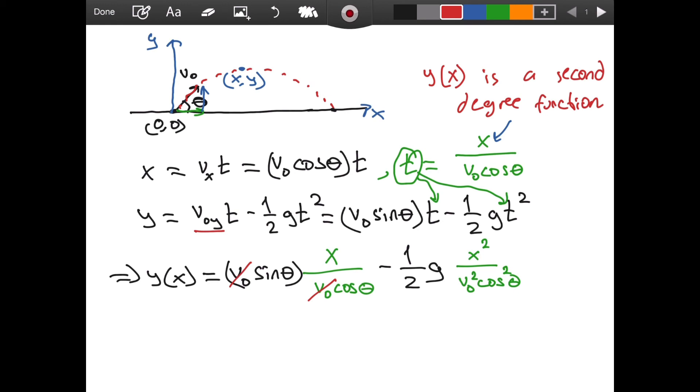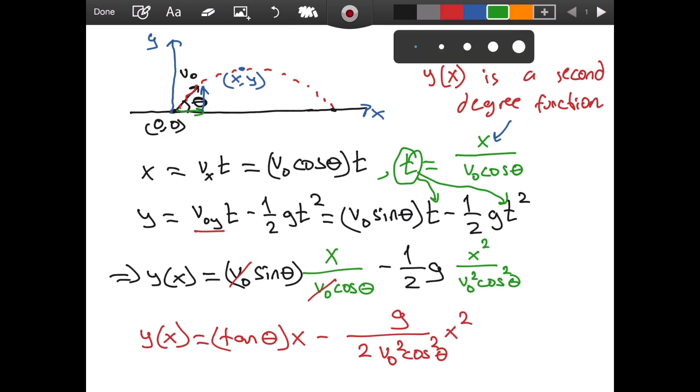So let me get our result more simplified. y of x is equal to tangent of theta times x minus 1 over 2, well, let's write it like this. 1 over 2, v naught squared, cosine squared theta. We have g on the numerator. And we have our x squared.